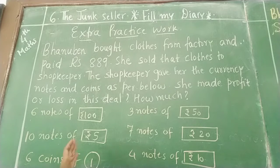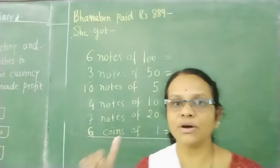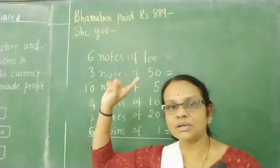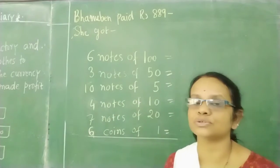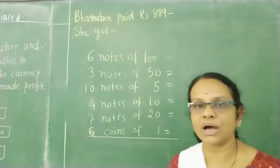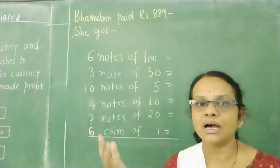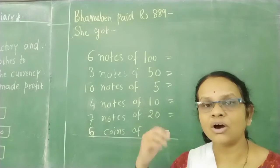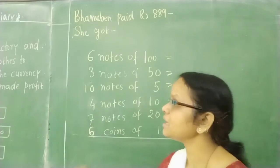Now we have to find out: did she make profit or did she make loss? If we get more money, we will have profit. If we get extra money, profit hoga. And if we get less money, loss hoga. Banu Ben paid rupees 889 to the factory. Now we have to find out what she got from the shopkeeper.